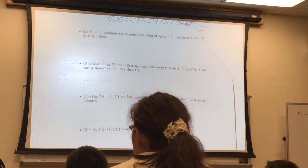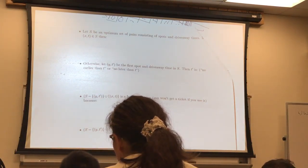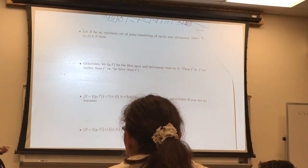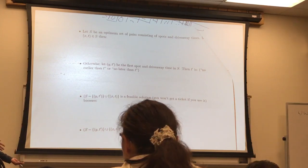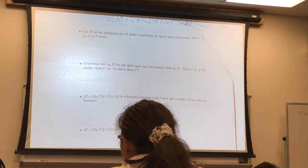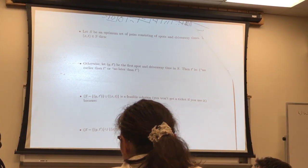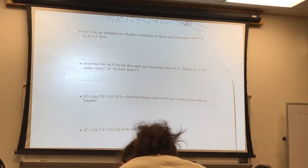Therefore, there's an optimum solution that has your first stop. You can swap, pick any optimum solution, you can swap out their first stop to your first stop without hurting the measure of the schedule. Now we make a recursive call on the rest of the day.